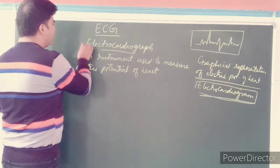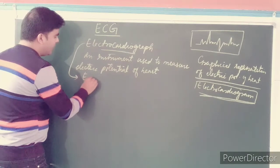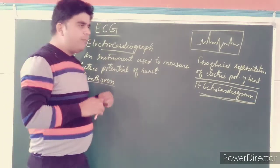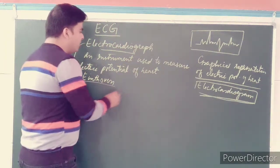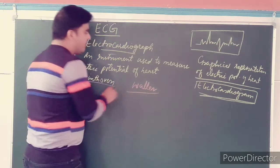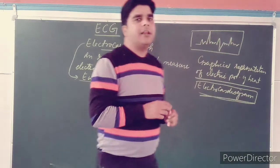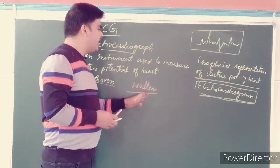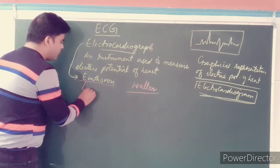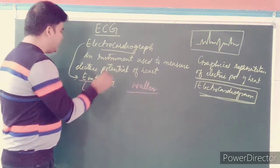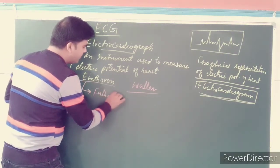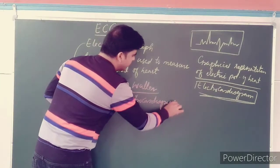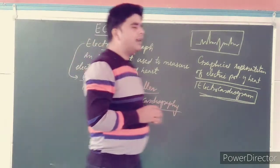This Electrocardiogram was invented by a scientist called Einthoven. From this ECG machine, the first graphical representation was made by the second scientist, Waller. So it was invented by Einthoven and the first ECG graphical representation was done by Waller. Because Einthoven invented the Electrocardiograph, he is regarded as the Father of Electrocardiography.